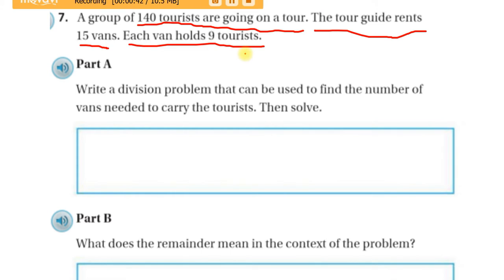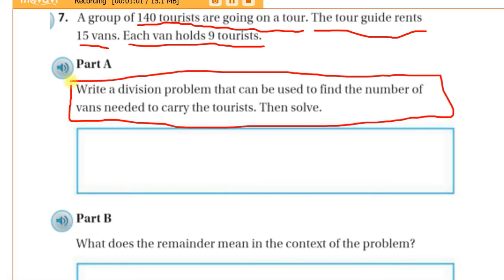I'm going to have to add one to the quotient, most likely, wherever I go. But let's continue on. It says write a division problem that can be used to find the number of vans needed to carry the tourists, then solve. Okay, so we're just doing a division problem. So don't get too caught up in these words, guys. This is, we've been doing this for weeks now. Write a division problem.